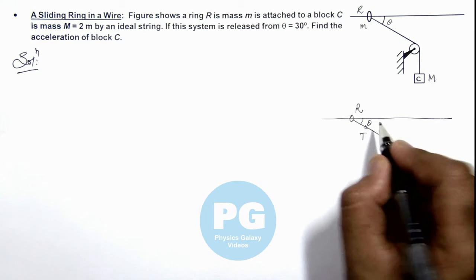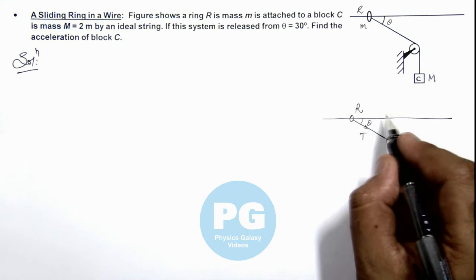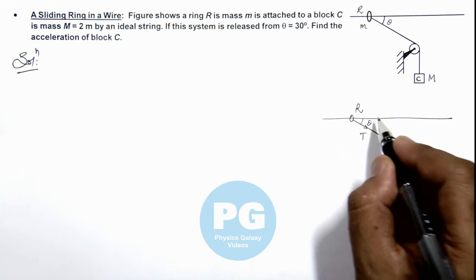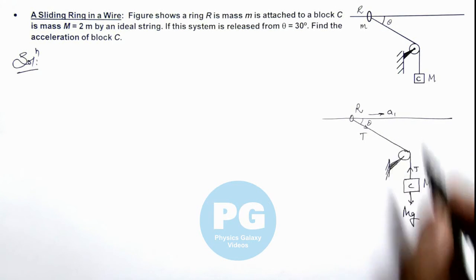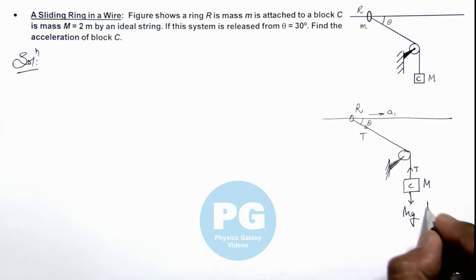If this angle is theta, and say the ring is moving with an acceleration ay1 and the mass M is moving with an acceleration ay.